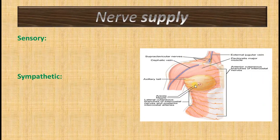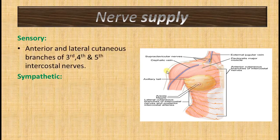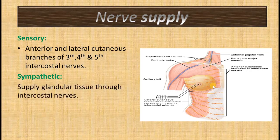The nerve supply consists of sensory nerves and sympathetic nerves. The sensory nerves are from the anterior cutaneous and lateral cutaneous branches of the 3rd, 4th, and 5th intercostal nerves — the spinal nerves of the thoracic region — which are involved in sensory innervation. These intercostal nerves also carry the sympathetic supply to the gland.